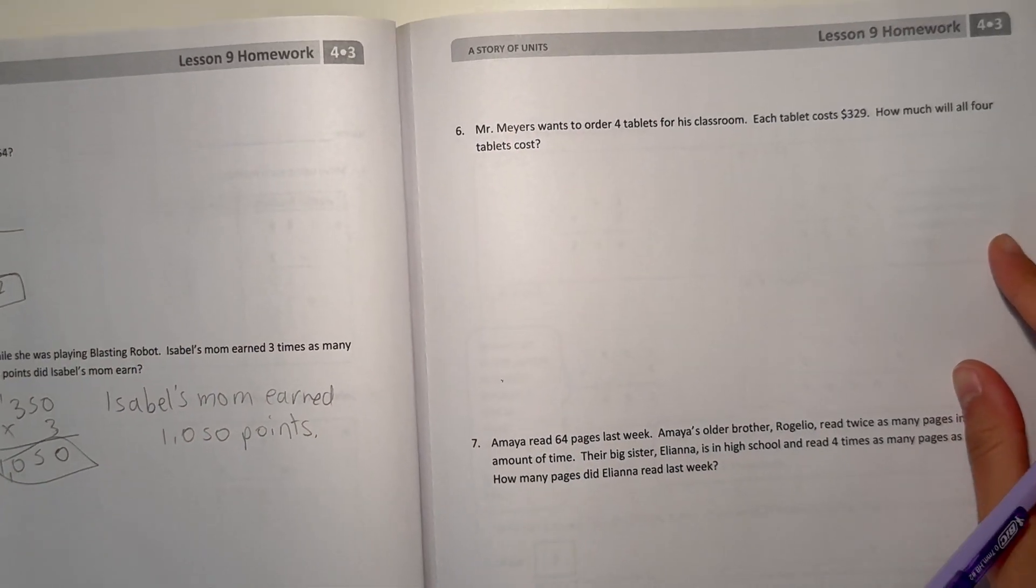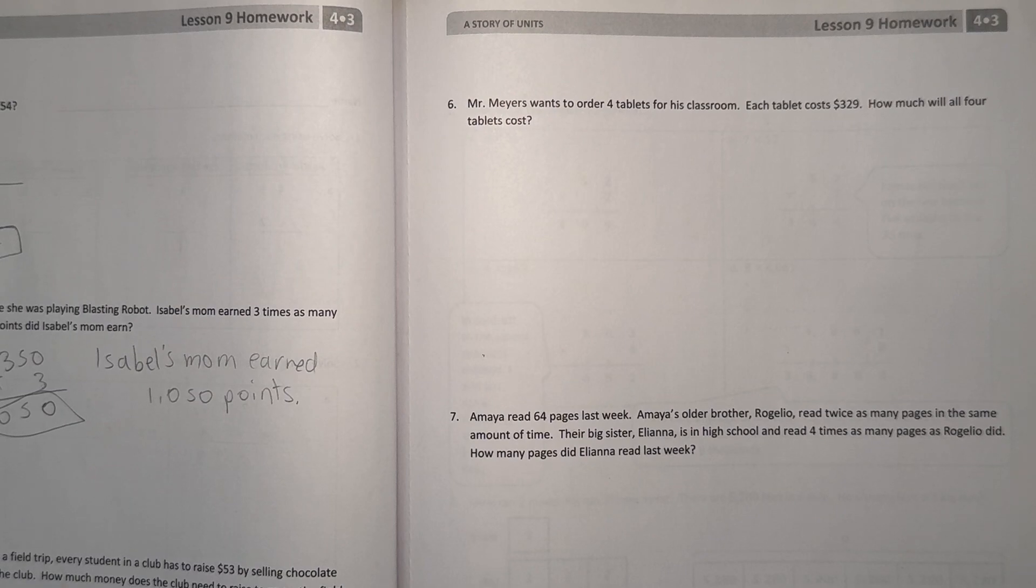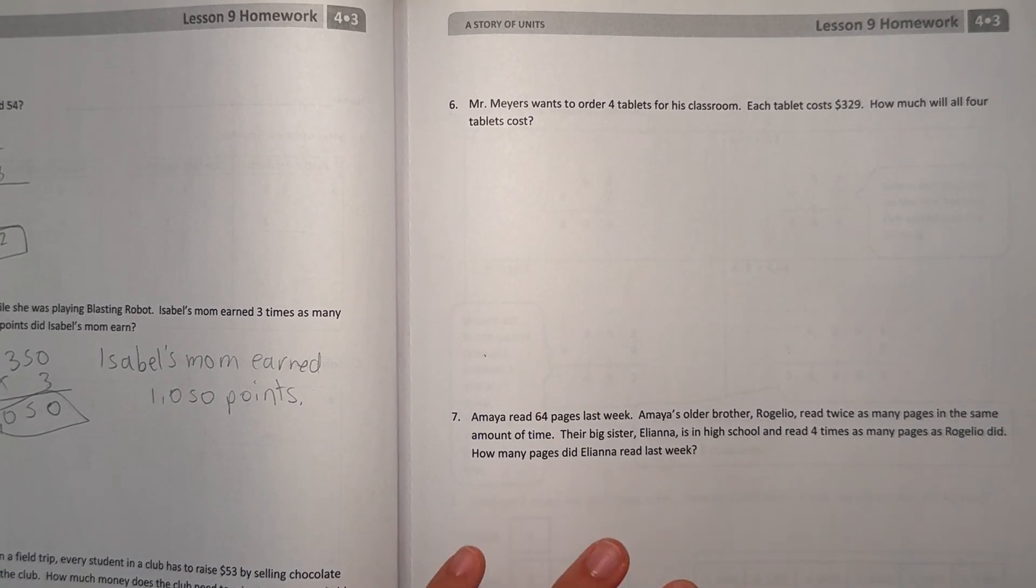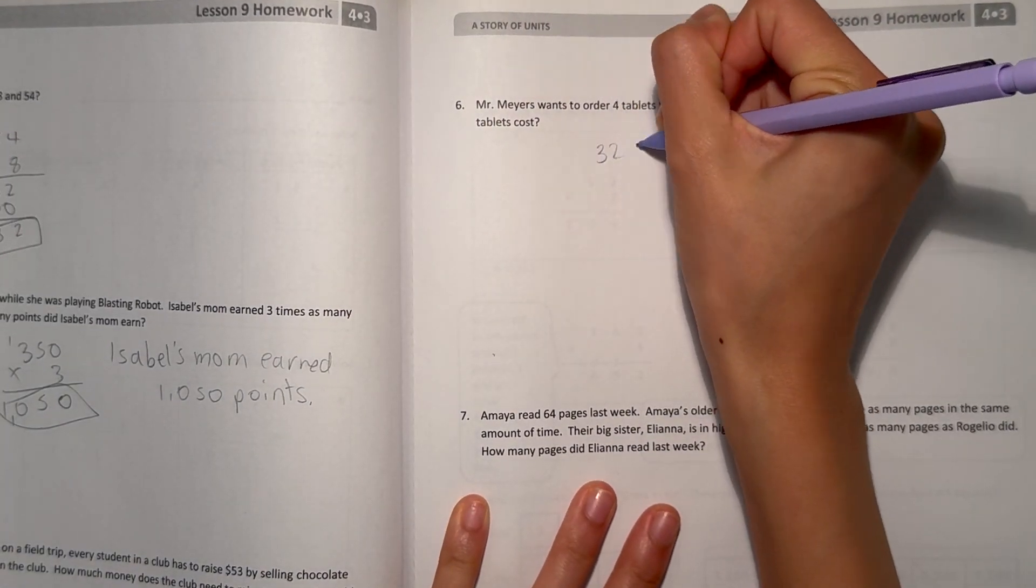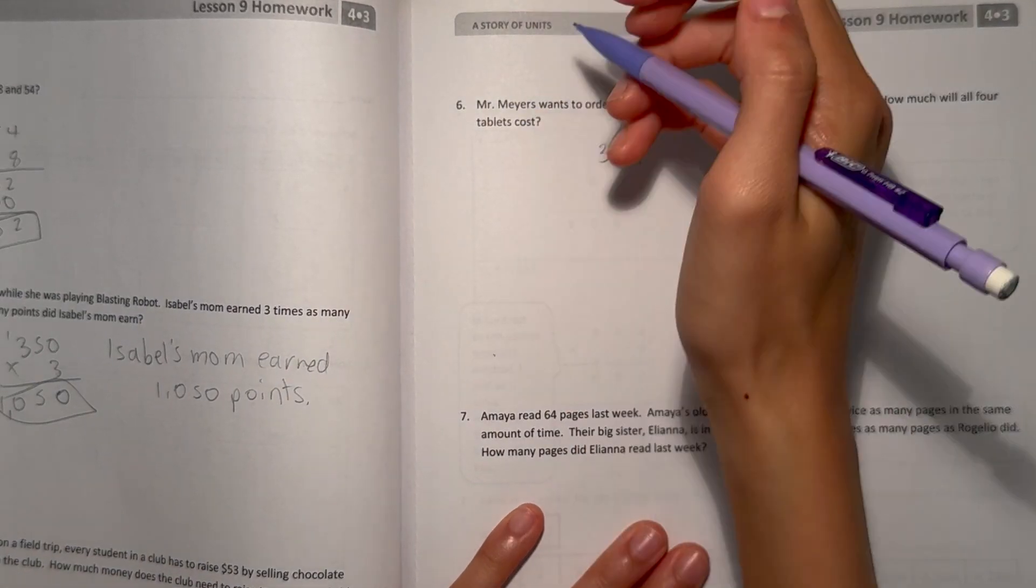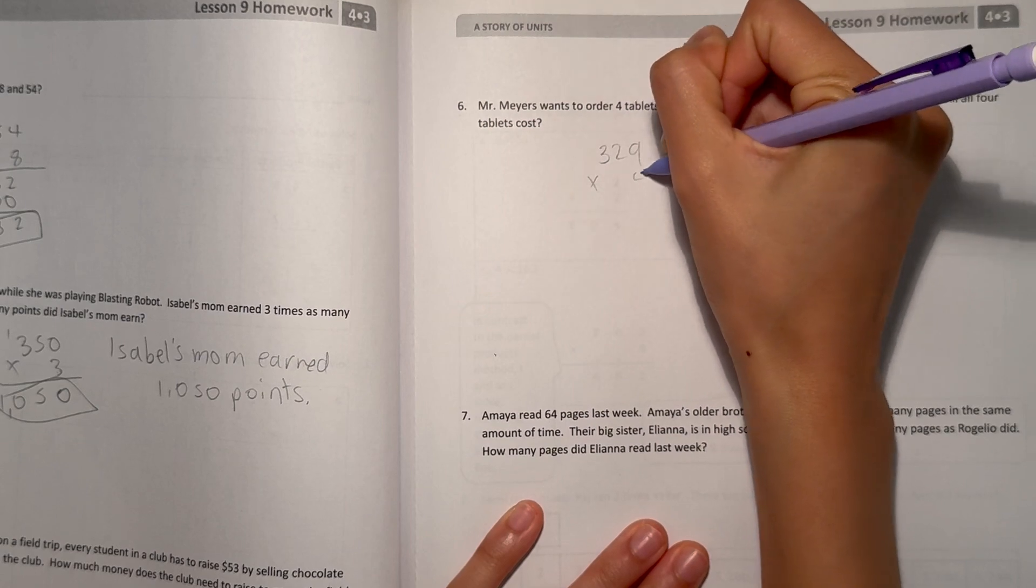Number 6, Mr. Myers wants to order 4 tablets for his classroom. Each tablet costs $329. How much will all 4 tablets cost? $329 for 4 tablets.